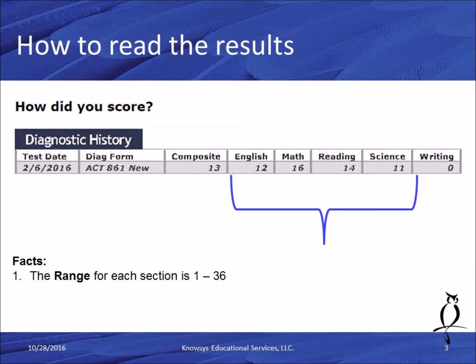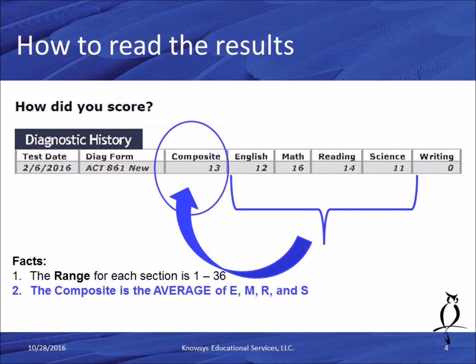The range for each individual section — English, math, reading, science — is 1 to 36, with 1 being the lowest and 36 being the highest, and the average on each one being right around 21. The composite score is the average of the first four: English, math, reading, and science. So when somebody says 'what's your ACT score,' they're asking for the composite.